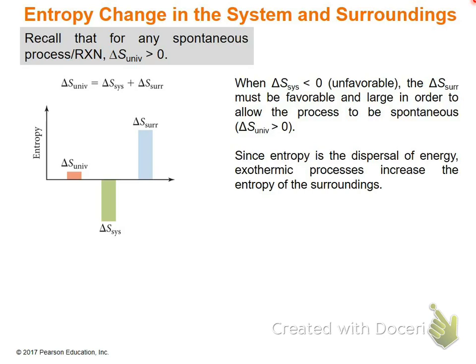For any spontaneous process, delta S universe must be positive — greater than zero. Delta S universe equals delta S system plus delta S surroundings. So if we have a negative delta S system, then delta S surroundings has to be a large enough positive value so that delta S universe is overall positive. If delta S system is a small negative number, delta S surroundings has to be a big positive number for the process to be spontaneous.